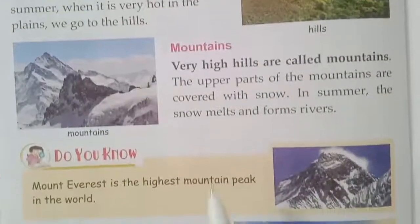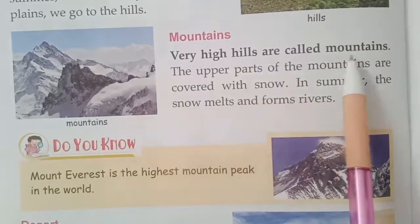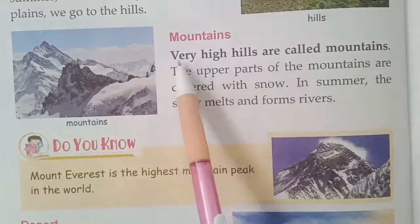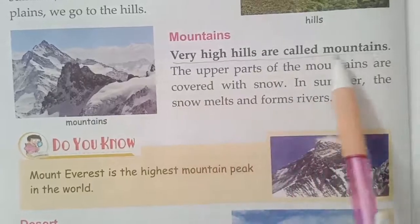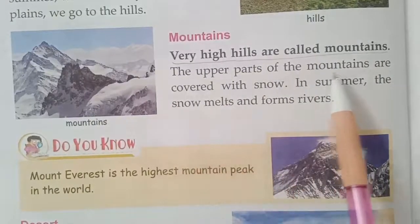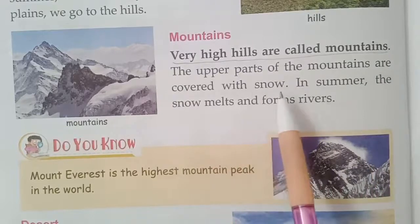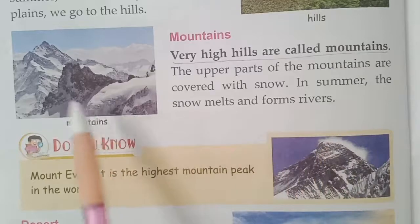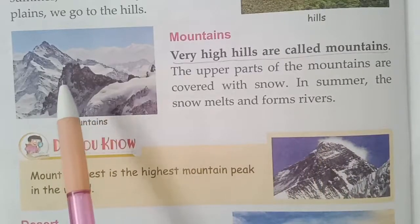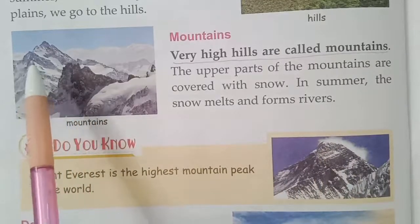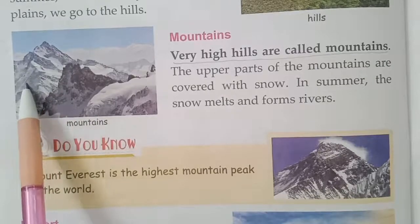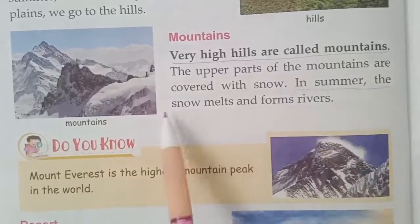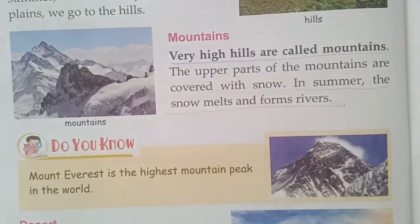Now, see this. Mountains. Very high hills are called mountains. The upper parts of the mountains are covered with snow. In summer, the snow melts and forms rivers. Mountain peaks are covered with snow, and when it melts, it becomes water and forms rivers.